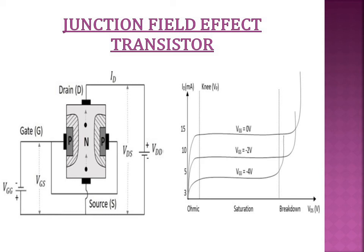This voltage is called the pinch-off voltage, when current starts saturating. After a certain voltage, breakdown in the device occurs. At this voltage, there is a breakdown in the depletion region on both sides, and as a result there is a heavy flow of carriers in the channel, which leads to an abrupt increase in current — this region is called the breakdown region. Furthermore, if we increase VGS to say 4V, the curve will shift downwards, because as we increase VGS, the PN junctions at the gate side become more reverse biased and more depletion region is formed. As a result, less current flows in the device due to the obstruction in carrier motion caused by the larger depletion region compared to the previous case.